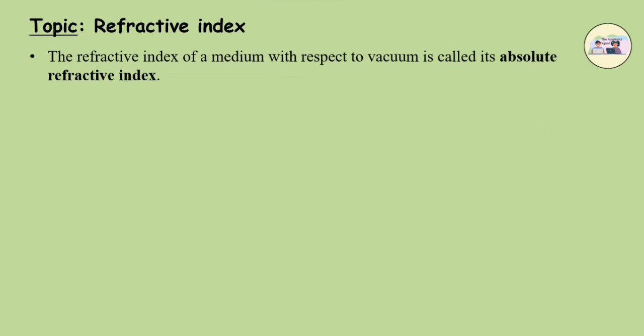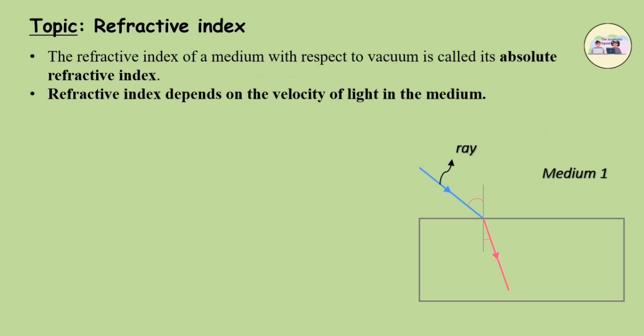The refractive index of the medium with respect to vacuum is also called the absolute refractive index. The refractive index depends upon the velocity of light in the medium. Let the velocity of light in medium 1 be V1 and in medium 2 be V2 as shown in the figure.